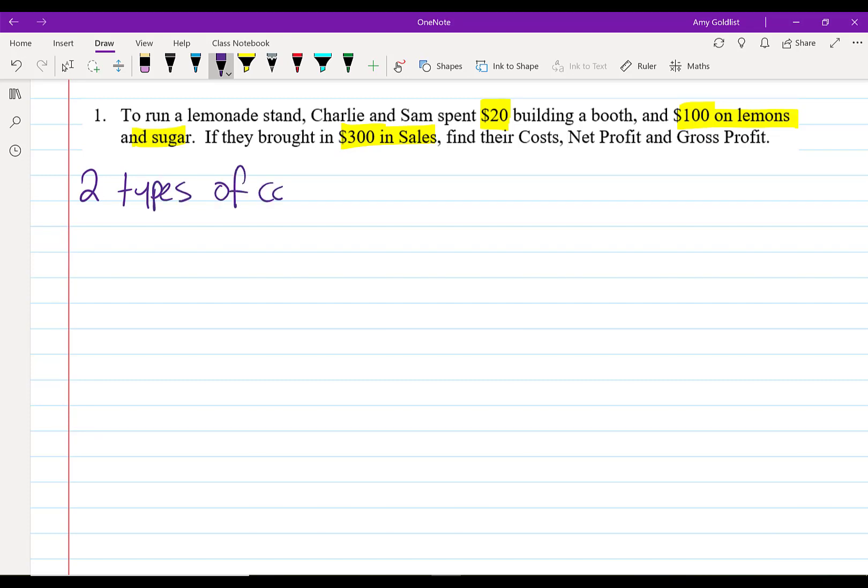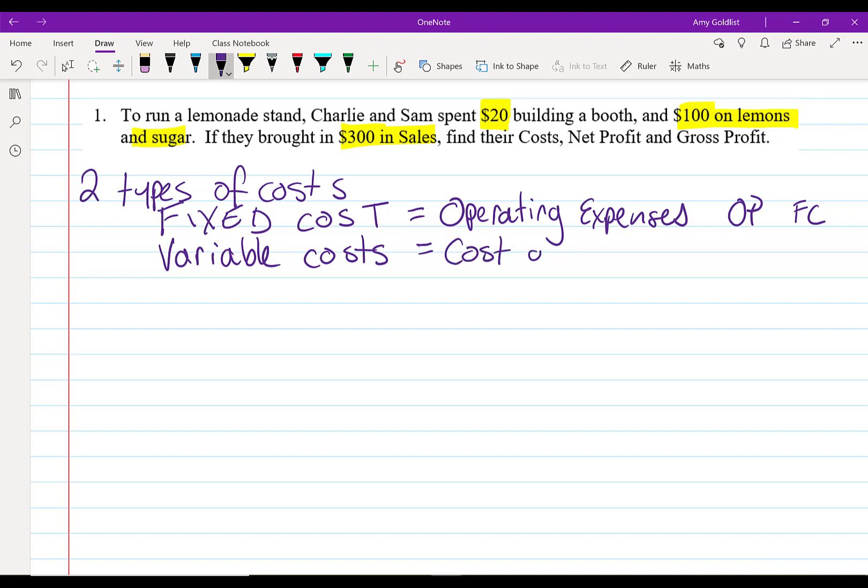Here, we have two types of costs. We've got fixed cost. This is also called operating expenses. And some books call this OP for operating or FC for fixed costs. We also have variable costs. And those are also called costs of goods sold. Sometimes COGS and sometimes VC for variable costs.